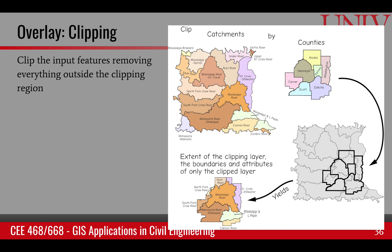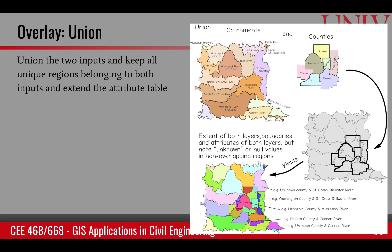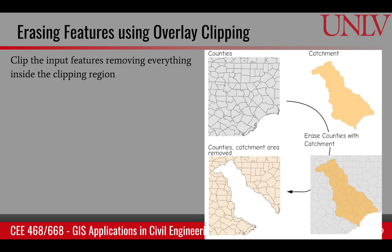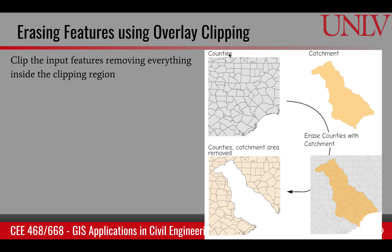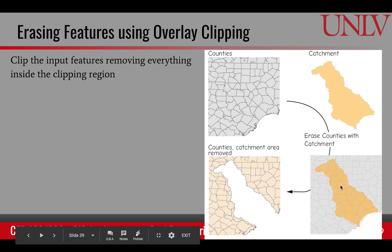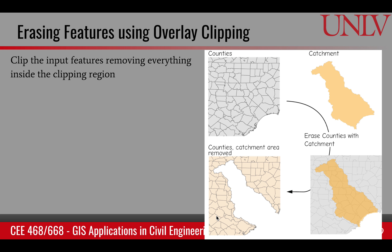Look at these three examples to understand the difference between clipping, intersection, and union. These can also be used to perform an erase operation, which is basically the complement of clipping. If I want to erase everything in the county map that is overlaid by the catchment, I erase everything under the catchment and keep everything outside — it's reverse clipping. The outside of the region is preserved and the inside is clipped.